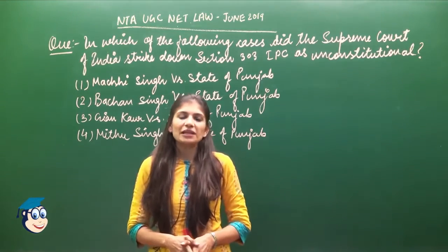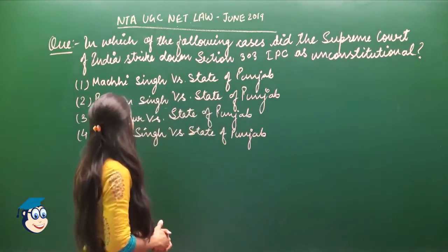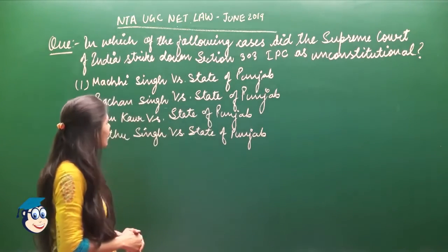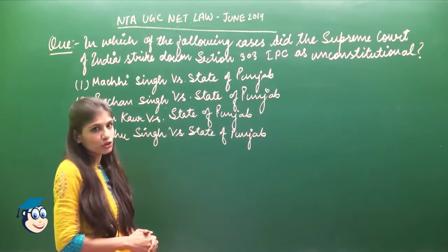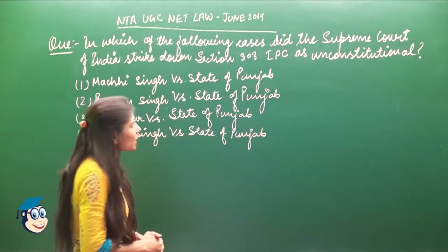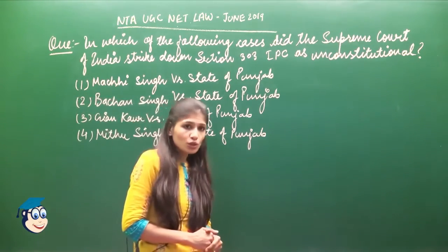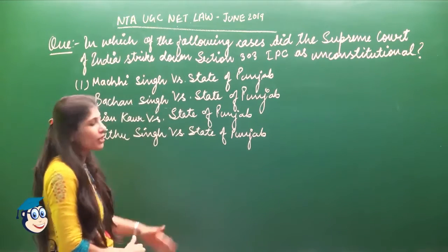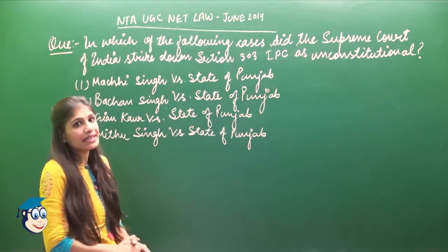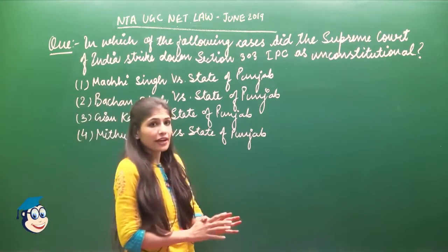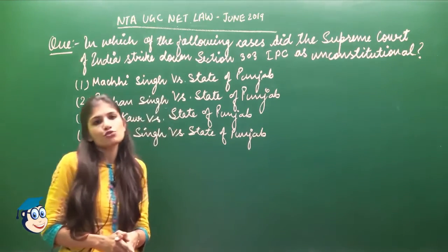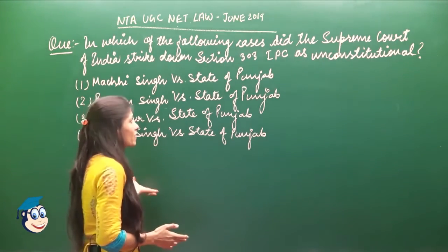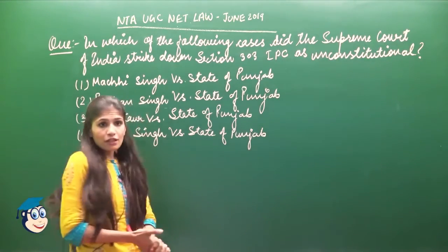Let's begin with the first question from June 2019: In which of the following cases did the Supreme Court of India strike down Section 303 of the Indian Penal Code (IPC) as unconstitutional? The question asks us to identify the case in which the Supreme Court declared Section 303 IPC unconstitutional.